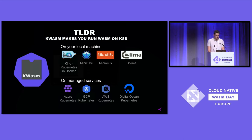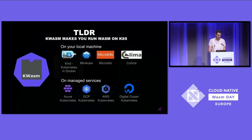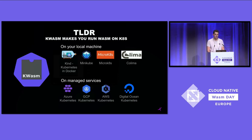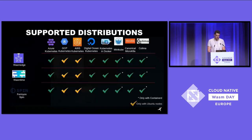What k-wasm is actually doing is providing you a way for your local clusters — for example those created with kind, minikube, MicroK8s, or Colima — to run your WebAssembly workloads. It also works on managed services like Azure AKS, Google Kubernetes Engine, and AWS EKS, or basically any provider.